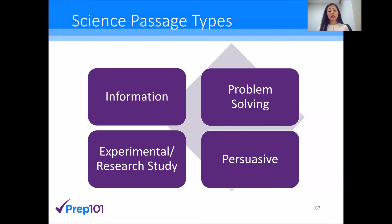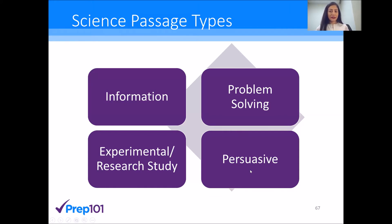The last type are persuasive passages. Persuasive passages want to test the validity of your viewpoints — they want to see whether you have sound scientific skills, or whether you'll just accept any theory presented to you. They're trying to convince you of something, and your job is to say, based on my scientific knowledge, that's not correct, or, based on what I've studied, that does seem like a very sound theory. That's the first half — talking about the passage types.